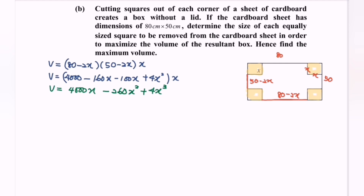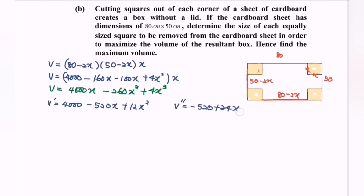Step 2 is to differentiate the expression two times. Find the first derivative: V prime equals 4000 minus 520x plus 12x squared. Then differentiate a second time — the second derivative: V double prime equals negative 520 plus 24x.